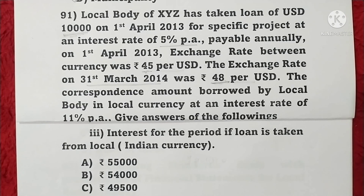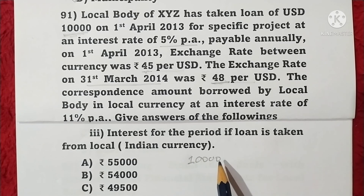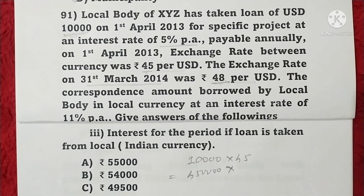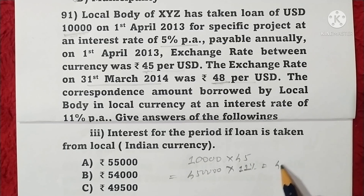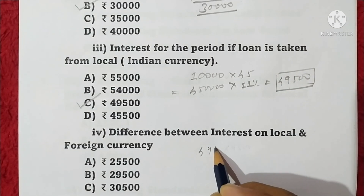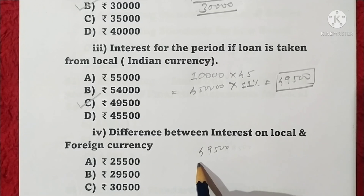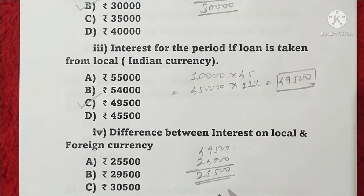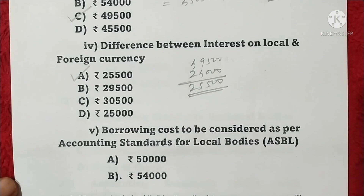Question 91 continued: Third — Interest if loan is taken in local/Indian currency — USD 10,000 × ₹45 = ₹4,50,000; at 11% interest = ₹49,500 — option C is correct. Fourth — Difference between interest on local and foreign currency: ₹49,500 (local) minus ₹24,000 (foreign) = ₹25,500 — option A is correct. Fifth — Borrowing cost for local bodies = ₹49,500 — option D is correct.